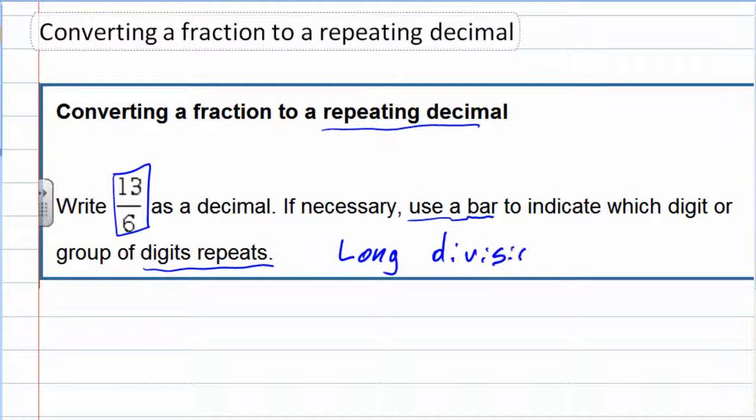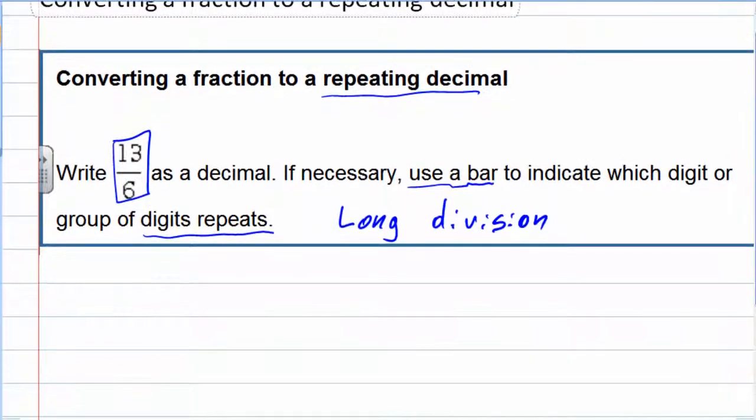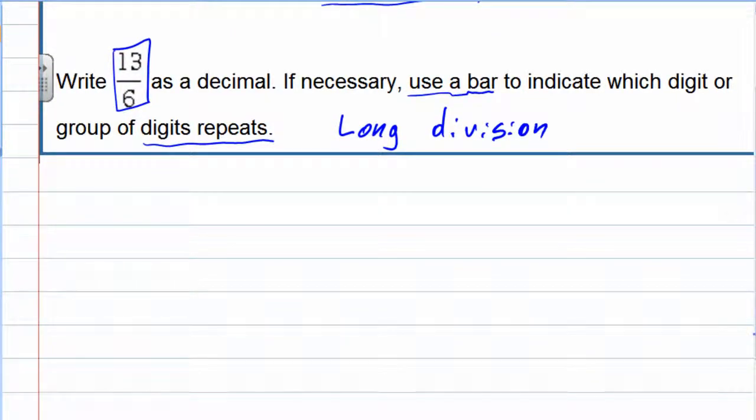That's going to be our setup. So let's get a little bit of room here. We're going to set up long division. The order is seemingly backwards because it's 13 divided by 6. The 13 is inside and the 6 is outside.